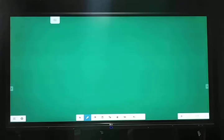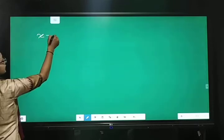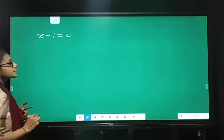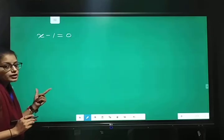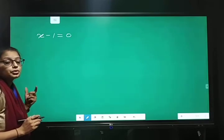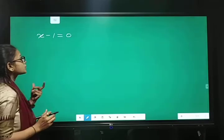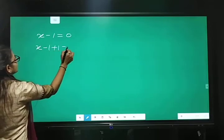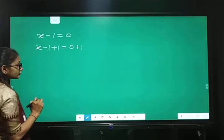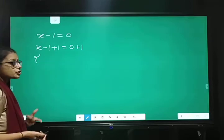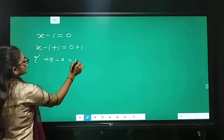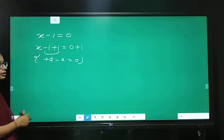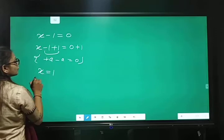Next topic is trial and error method. X minus 1 equal 0. Ismei aapke variables ki value find karenge hai. Toh first is x minus 1 equal 0. Adding both side to 1. Agar 1 ko hum both side mein add karenge toh. Plus 1 equal 0 plus 1. We know that properties of integer plus a and minus a equal 0. So, minus 1 and plus 1 equal 0. So, value of x equal 1.